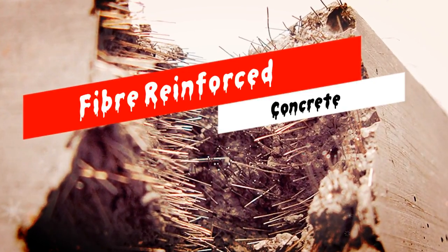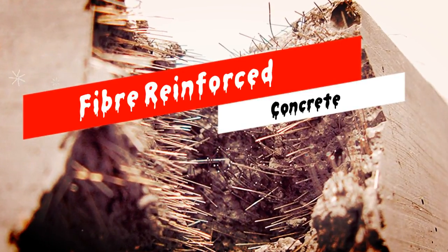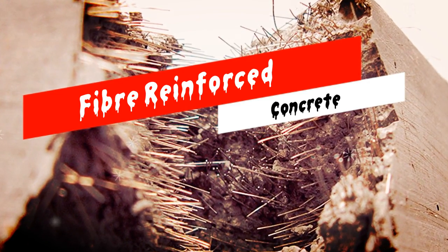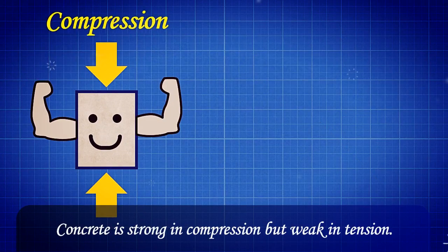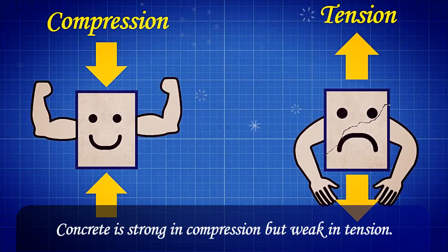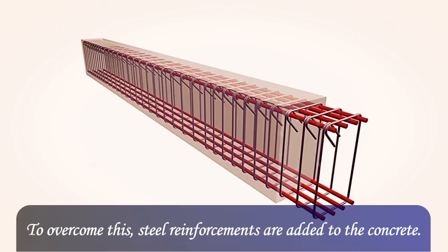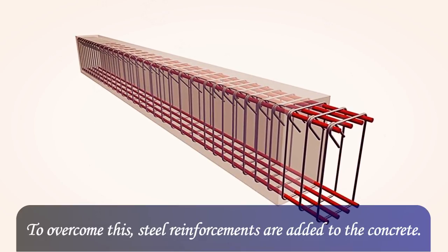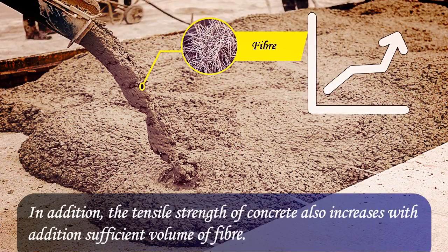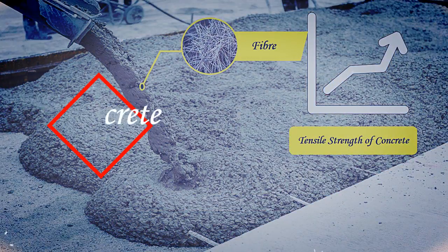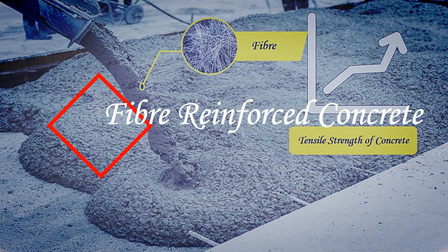This video explains fiber reinforced concrete and the effect of fiber in concrete. We all know that concrete is strong in compression but weak in tension. To overcome this, steel reinforcements are added to the concrete. In addition, the tensile strength of concrete also increases with the addition of a sufficient volume of fiber, and this concrete is called fiber reinforced concrete.